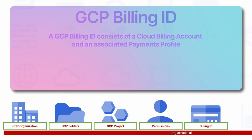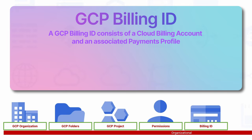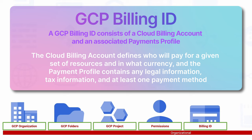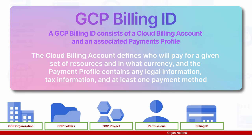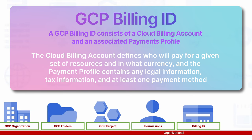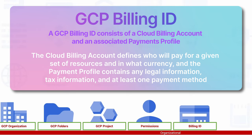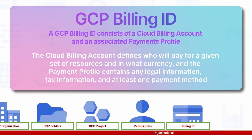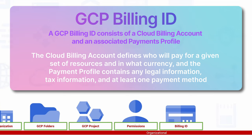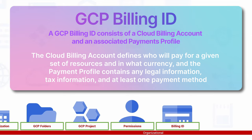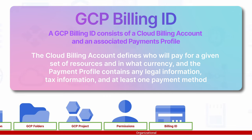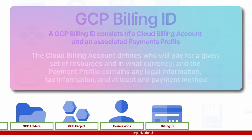A GCP billing ID consists of a cloud billing account and an associated payments profile. The cloud billing account defines who will pay for a given set of resources and in what currency, and the payment profile contains any legal information, tax information, and at least one payment method.